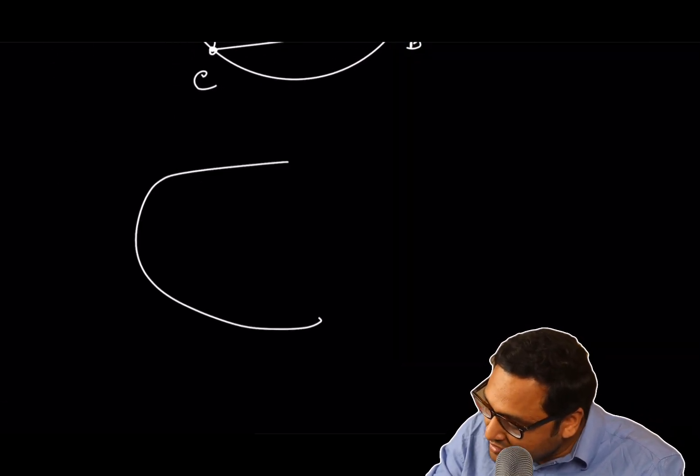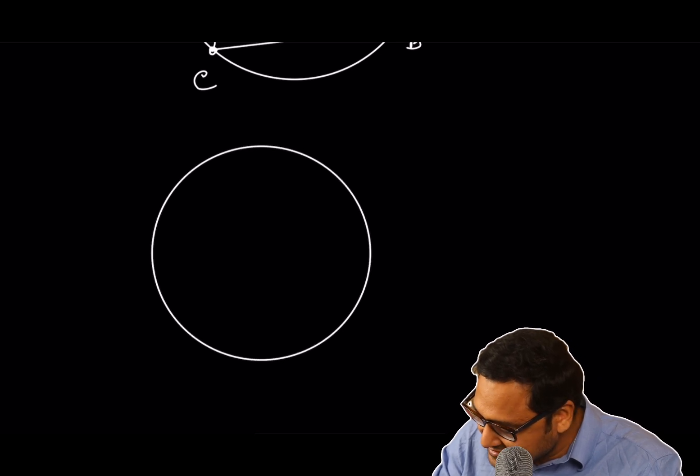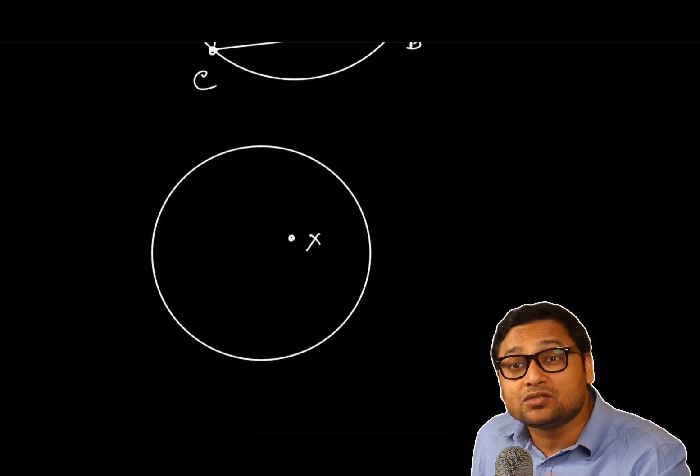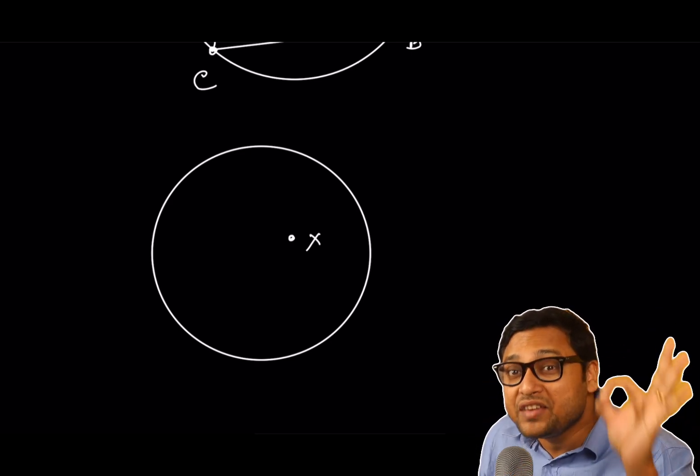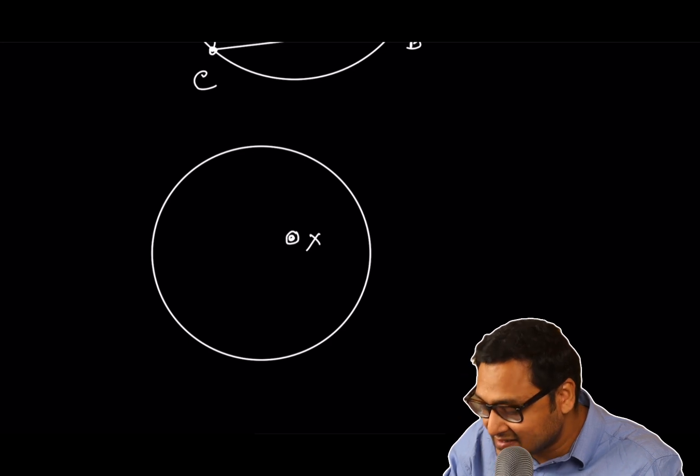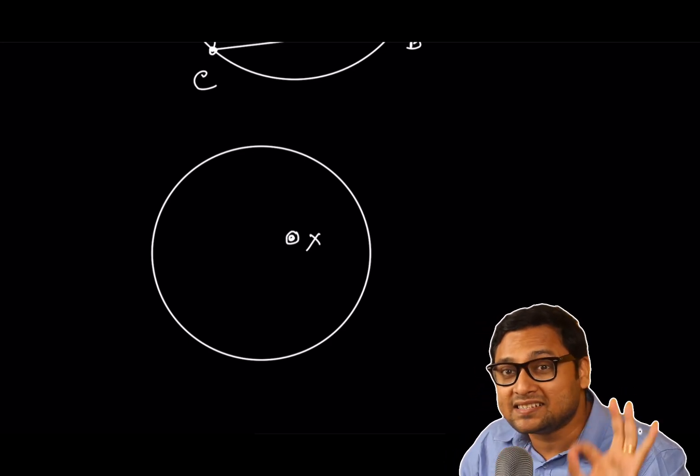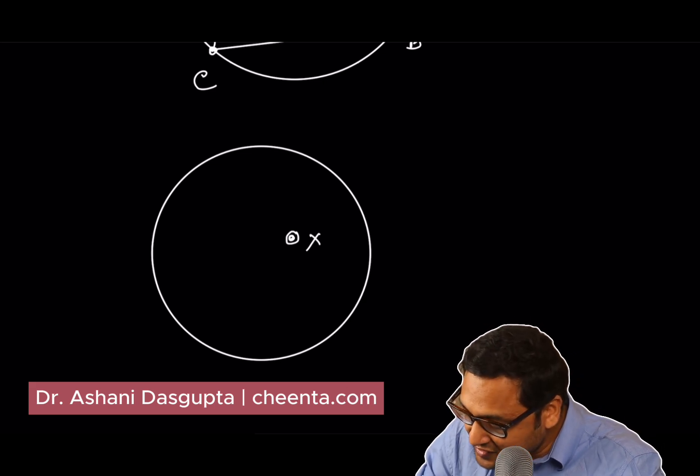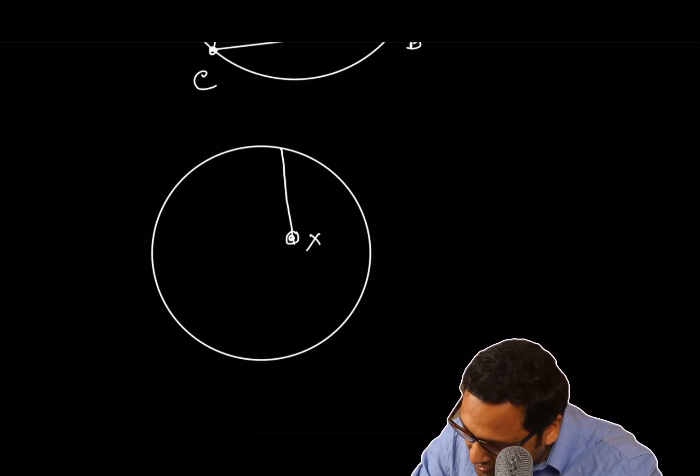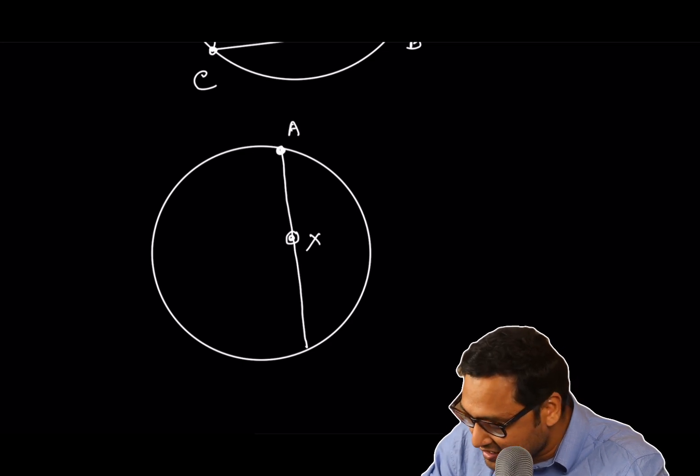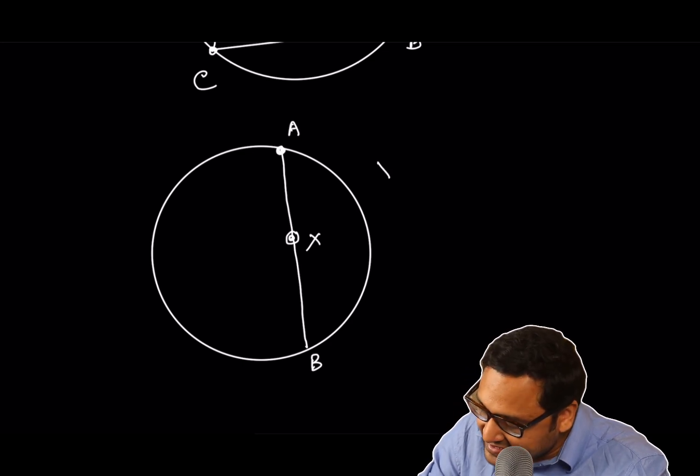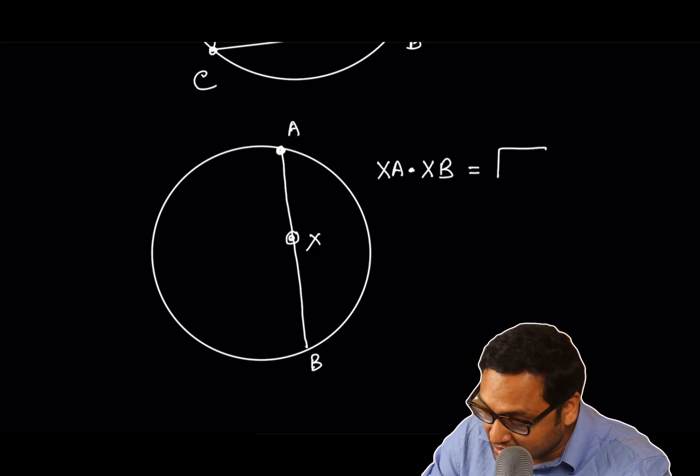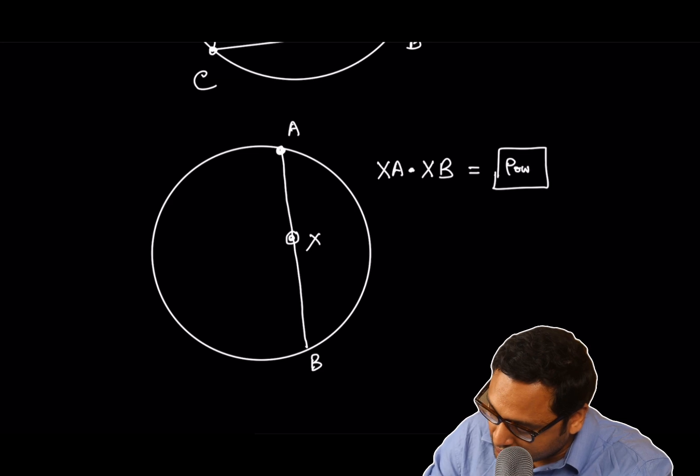Suppose we have a point X in the circle. Then power of X with respect to the circle is a special feature of this point X, a number that describes the point X. How do you figure out the number? There are two ways. The first way is that you draw a line that intersects the circle. Then XA times XB is that number, this magical number. This is called power of X.